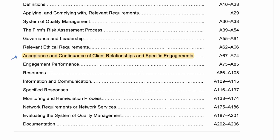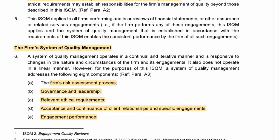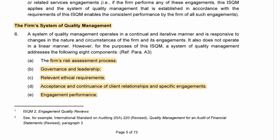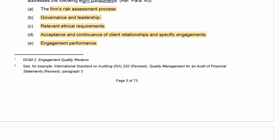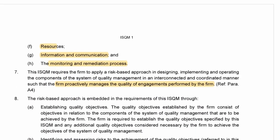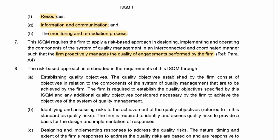For every requirement there is an application paragraph that addresses the requirements more practically. I've highlighted this application paragraph because it explains what needs to be adhered to or considered in acceptance and continuance. The firm's system of quality management has eight components: the risk assessment process, governance, ethical requirements, acceptance and continuance, engagement performance, resources, information and communication, and monitoring and remediation processes.